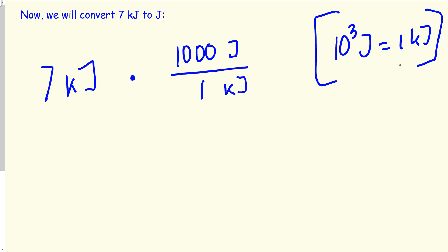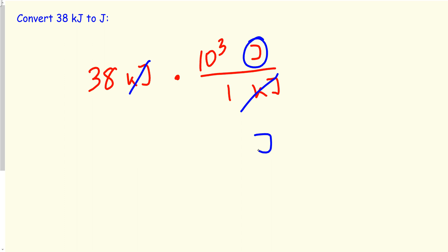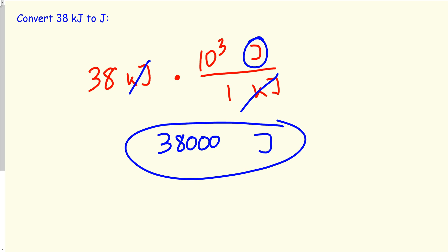Just understand which unit you're solving for. In this case, solving for joules means kilojoules goes at the bottom. Since 1,000 joules equals 1 kilojoule, the final answer is 7,000 joules. Let's try 38 kilojoules: joules at the top, kilojoules at the bottom. The conversion factor is 1,000 joules per 1 kilojoule. Cross out kilojoules, and 38 times 1,000 gives you your answer. This might look simpler but it's exactly the same type of question.